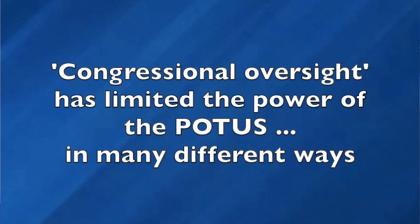Congressional oversight has also played an important role in limiting the power of the president. Congress has the power to investigate the actions of the executive branch — that can be the actions of the bureaucracy or any of the agencies — but can also investigate the actions of a president to see if they were warranted or not. This also is part of checks and balances.